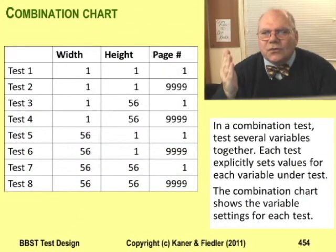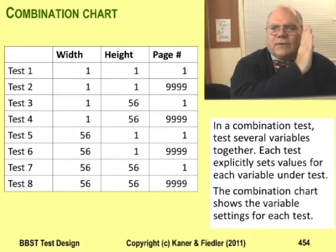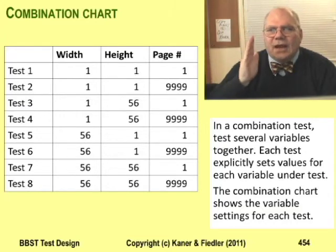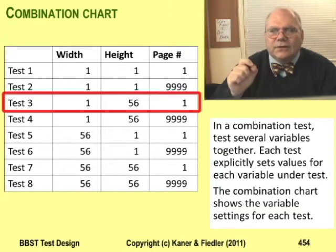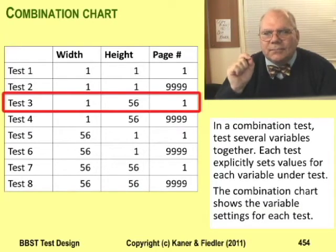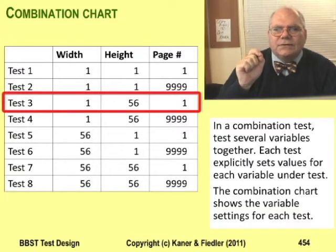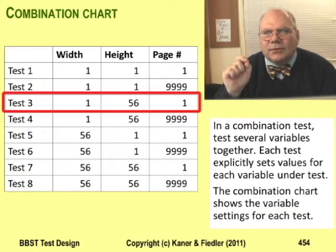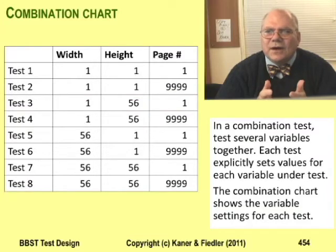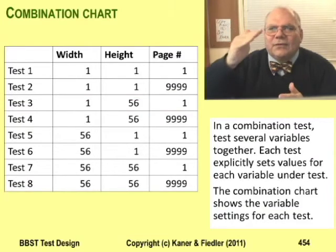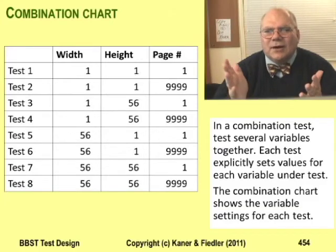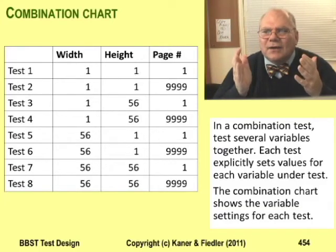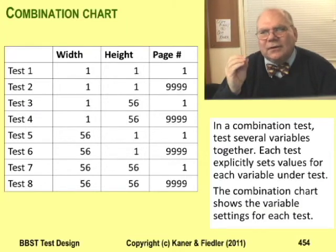This slide shows the eight corners on a combination chart. On a combination chart, every column is for one variable, every row is for a separate test, and every test sets a value for every variable. For example, test three combines a page width of one with a page height of 56 with a starting page number of one. Notice that you're only testing two values for each variable — the upper bound and the lower bound. This is common in combination testing: you want to use the smallest set of values for each variable, because every extra value multiplies by all combinations of all the other tests.